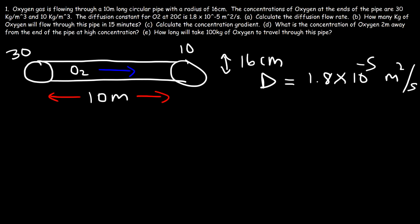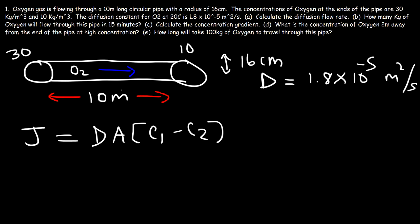Now for the important part: what equation do we use to calculate the diffusion flow rate? The diffusion flow rate J equals the diffusion constant D times the cross-sectional area A times the difference in concentration C1 minus C2, divided by the length of the pipe. On the left, C1 is 30 kilograms per cubic meter, and on the right, C2 is 10 kilograms per cubic meter. The flow rate is inversely related to the pipe length.